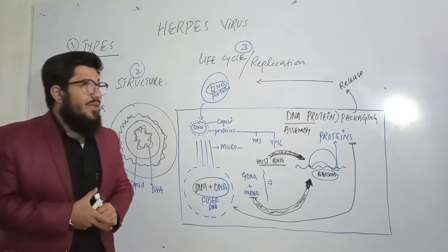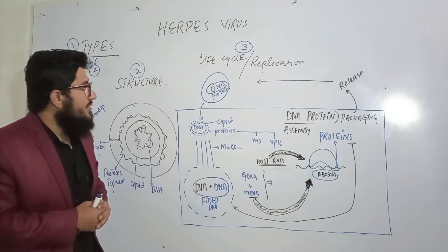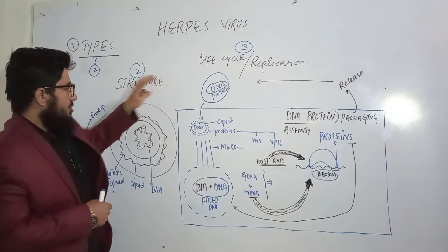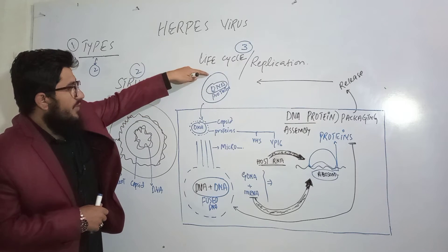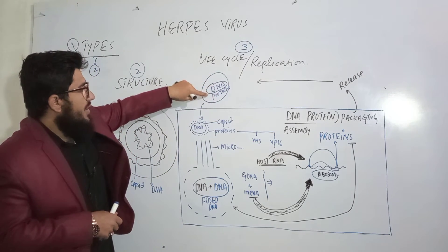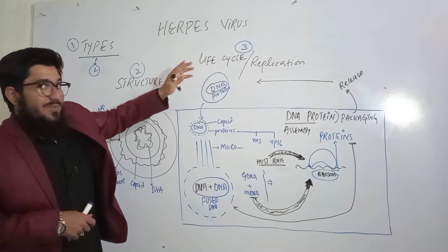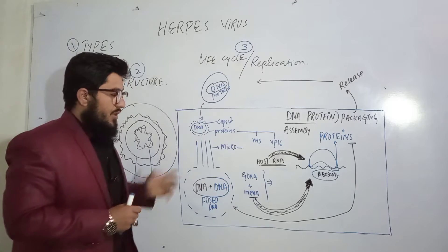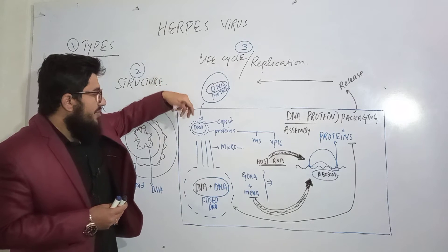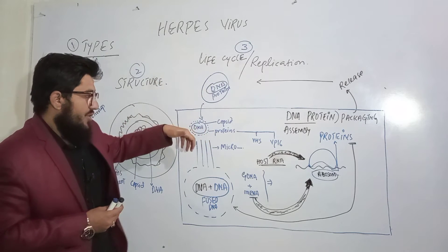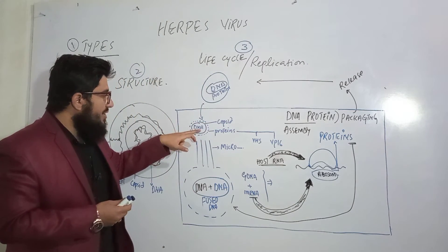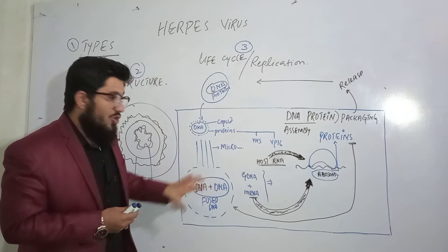In the third point, we'll talk about the life cycle or replication. Here is the herpes virus with its rough structure: the envelope, then the tegument proteins along with some other proteins, then the capsid, and then the DNA. This virus will enter the targeted cell. As the virus starts entering, its envelope will remain outside and the remaining proteins, capsid, and DNA will enter. The proteins will go and give directions.